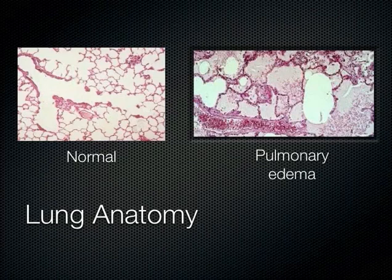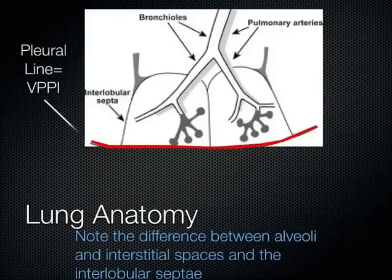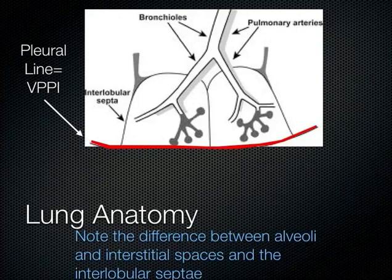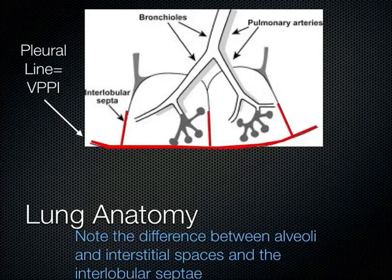The pleural line is also referred to as the VPPI — the visceral-parietal pleural interface — meaning where the visceral and parietal pleura come together and move on each other. The terminal bronchioles go all the way out to the periphery of the lungs, and the interlobular septi come up to the surface in a perpendicular fashion — important for explaining the artifacts we see. Most people have interlobular septi about seven millimeters apart; just approximate in your head how far these structures are from each other.